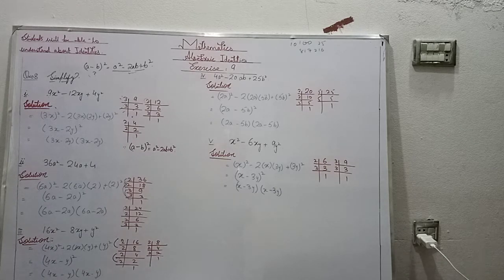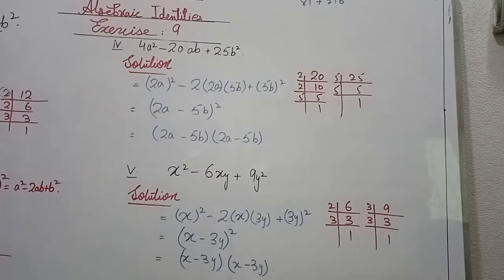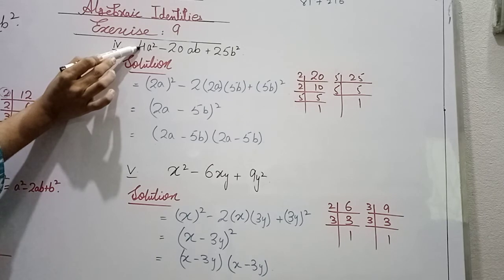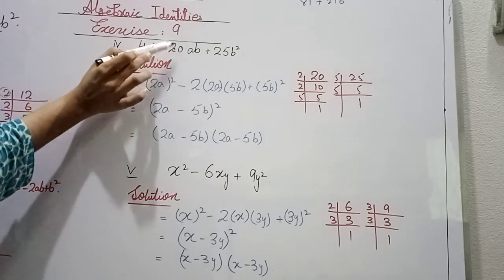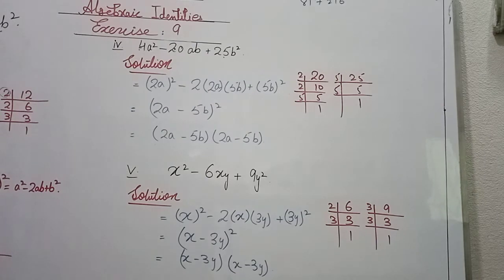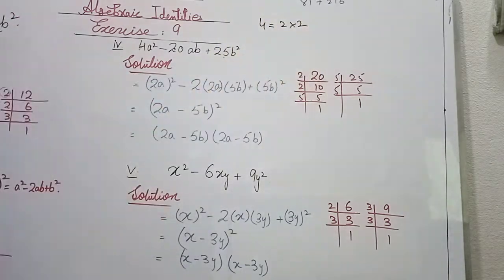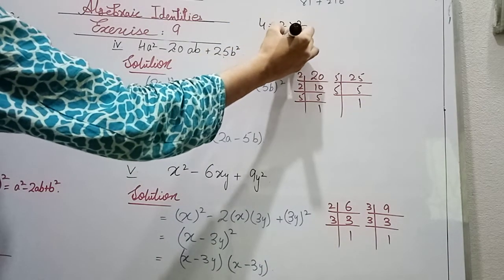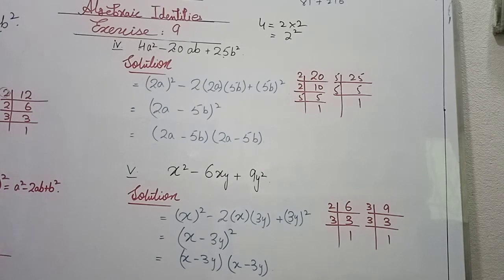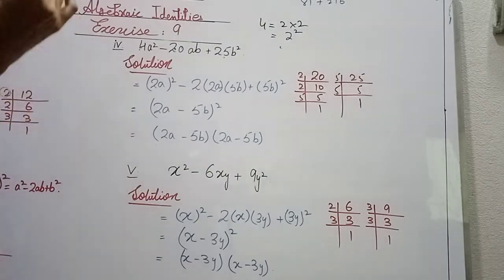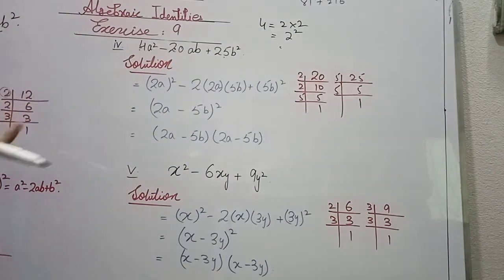The fourth part is 4a² minus 20ab plus 25b². The first term is 4a², where 4 = 2×2, so a term is 2a. For 20: 20 = 2×2×5, giving the middle term coefficient. For 25 = 5×5, so b term is 5b. We now have (2a)² to match a² in the identity, and 5b for b.